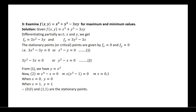Next problem: Examine the function f(x, y) equal to x cubed plus y cubed minus 3xy for maximum and minimum values. Follow the same procedure as before — find out the partial derivatives and equate to 0. You get x squared minus y equal to 0 as equation 1, and y squared minus x equal to 0 as equation 2.